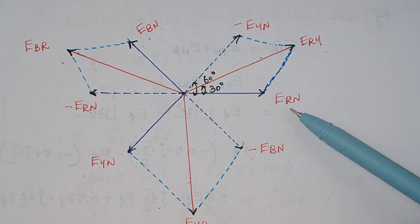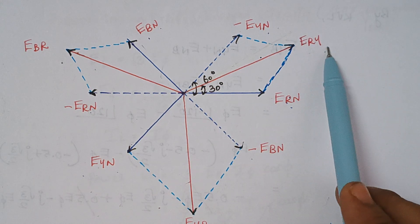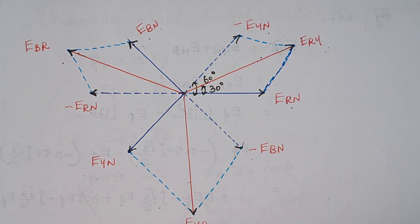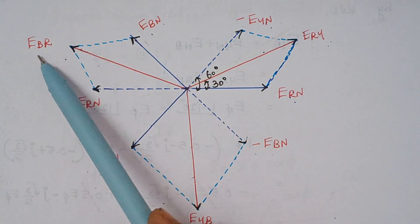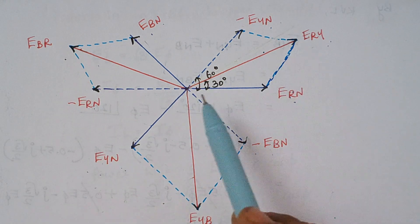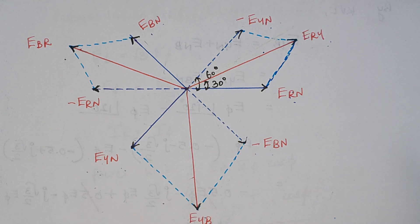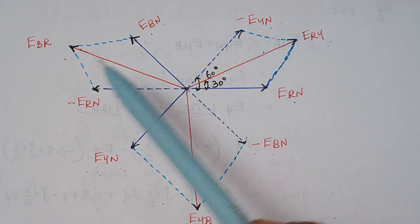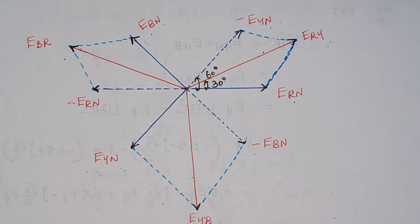Here we have R and here we have Y, therefore the net value is E-R-Y. Similarly, here we have B and here we have Y, therefore it is E-Y-B. Similarly between R and B we have E-B-R. The line voltage E-Y-B is the summation of E-Y-N and minus E-B-N. Similarly, E-R-Y equals E-R-N plus minus E-Y-N. And E-B-R equals E-B-N plus minus E-R-N.